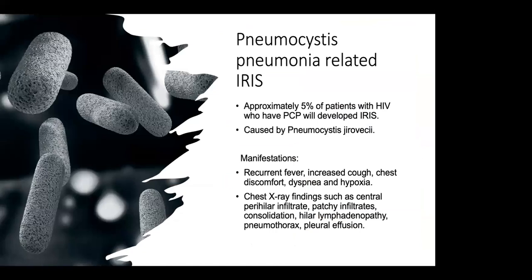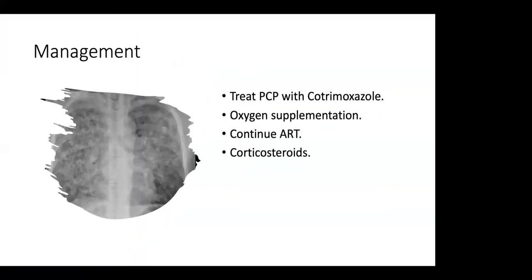Pneumocystis pneumonia-related IRIS: approximately 5% of HIV patients with PCP will develop IRIS. It is caused by Pneumocystis jirovecii. Manifestations include recurrent fever, increased cough, chest discomfort, dyspnea, and hypoxia. Chest X-ray findings include central perihilar infiltrates, patchy infiltrates, consolidations, hilar lymphadenopathy, pneumothorax, and pleural effusions. Management: treat PCP with cotrimoxazole, provide oxygen supplementation, continue ARVs, and corticosteroids are warranted.